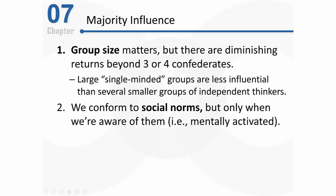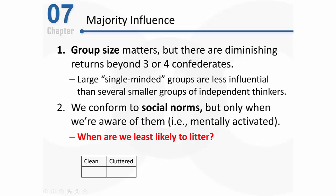The next key factor is salience of norms. We conform to social norms only when we're aware of them — when they're mentally activated. Consider research by Robert Cialdini, who wanted to see when people were least likely to litter. He set up experiments in a parking lot that was either incredibly clean or cluttered with debris, essentially establishing a norm just by the environment. Entering that parking lot, you'd see either that people don't litter here, or that people litter quite often.